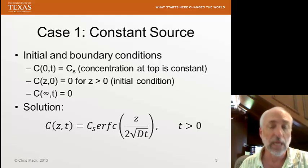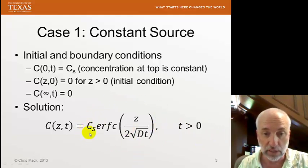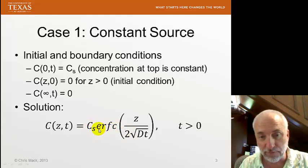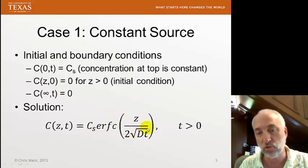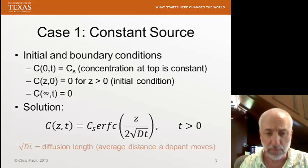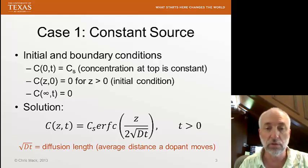The solution is an error function. The concentration of the dopant as a function of z and t, for t and z greater than zero, is this equation. Cs is the top constant dopant concentration, and then we have the complementary error function — ERFC — of z over 2 times the square root of Dt. The square root of Dt is a very special term. We give it the name diffusion length, which by definition is the average distance a dopant atom moves in that cycle.